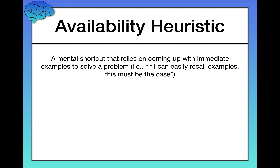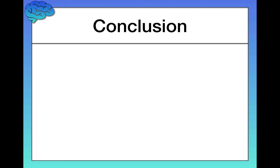This is a great illustration of a heuristic called the availability heuristic — a mental shortcut that relies on coming up with immediate examples to solve a problem. The rule is: 'If I can easily recall examples, this must be the case.' When answering that question, it was probably really easy to come up with examples of R in the first position of a word, and much more difficult for R in the third position. That's the availability heuristic — it's not the only one we'll see, but it's a big one.